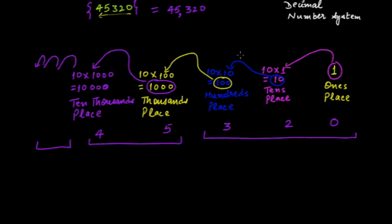This grouping is important because each place has some value, and we can read the number on that basis. How to read the number and how to expand them we'll see in the next video. I hope the concept of place value in the decimal number system is clear — each digit has a place assigned to it, and each place has some value. The ones place is one, the tens place is ten, the hundreds place is hundred, and so on.